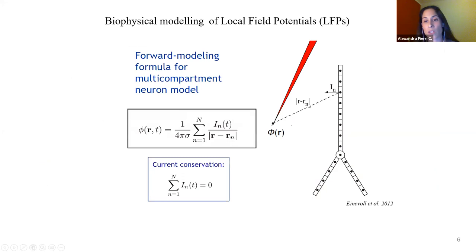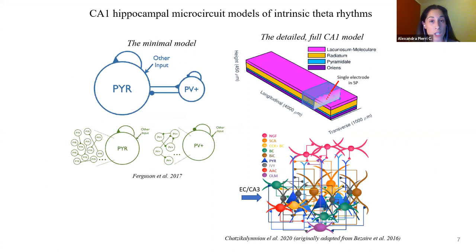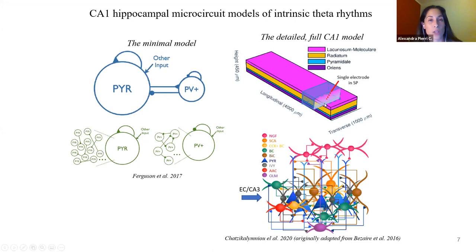LFPs are the summation of transmembrane currents that pass through the cellular membranes at the vicinity of a recording electrode tip. In my work, I've utilized mainly two models. One is a simplified minimal model comprised of Izhikevich neurons described by differential equations that reproduce the dynamic output of cellular activity. I've also utilized a detailed CA1 model, which is a biophysically accurate model comprising cells with morphological detail, realistic ion channel representations, and experimentally derived connectivity.